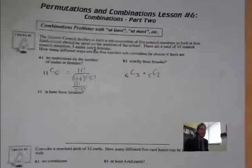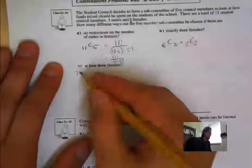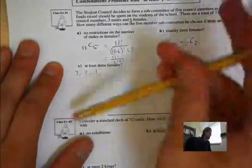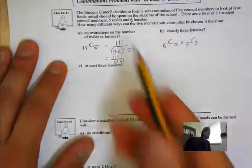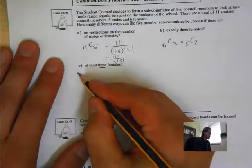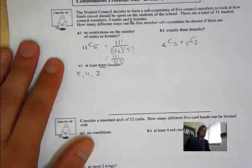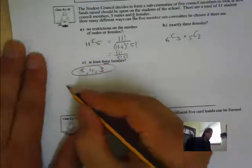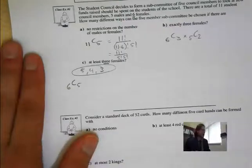The last one says: at least 3 females. So the minimum is 3 females. That means we could have 5 females, 4 females, or 3 females. The first option is out of 6 females, we're choosing 5 — that's the maximum we could have. Then out of 5 males, we're choosing 0. So that's 5 females and 0 males.